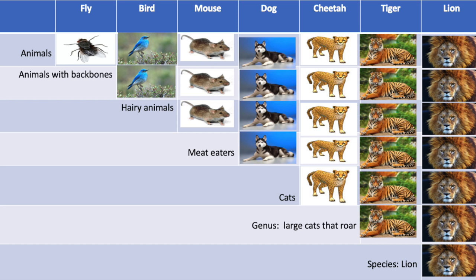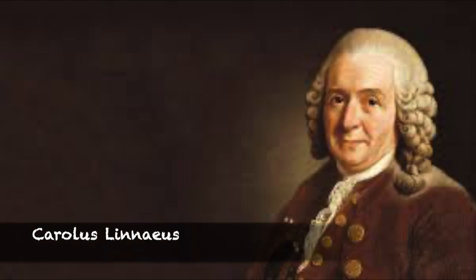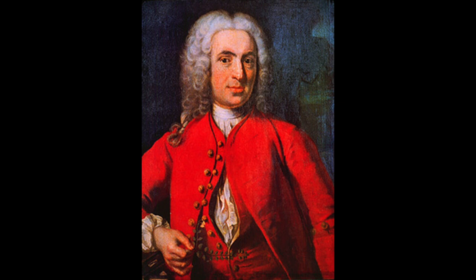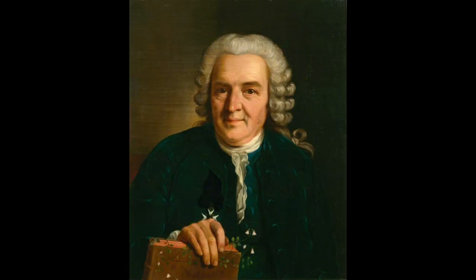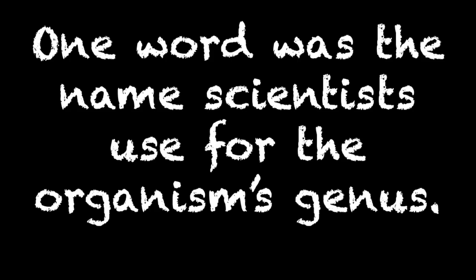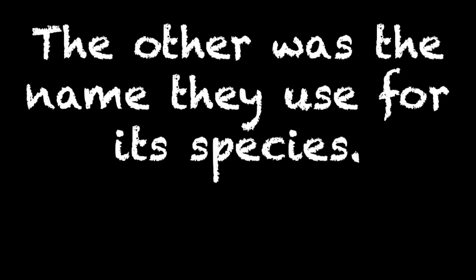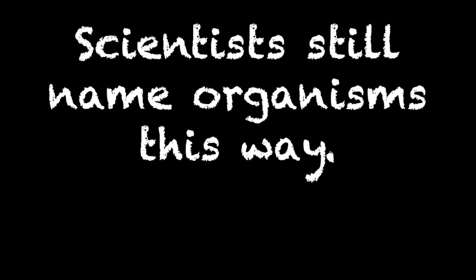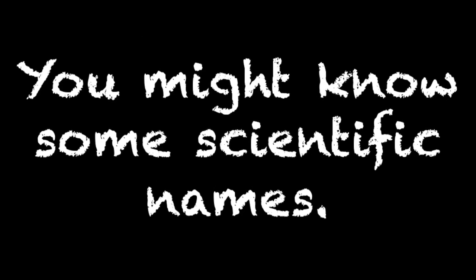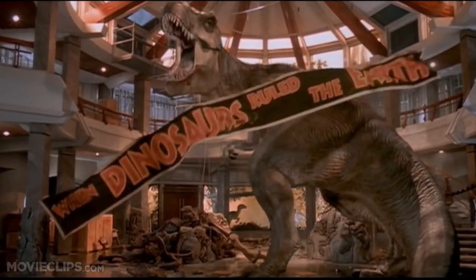Organisms in the same genus are closely related. About 250 years ago, Carolus Linnaeus, a Swedish biologist, developed a way to name organisms and show relationships. He gave each kind of organism a two-word name. One word was the name scientists use for the organism's genus, and the other was the name they use for its species. Scientists still name organisms this way. You might know some scientific names. For example, Tyrannosaurus rex, or T. rex for short, is a dinosaur that lived millions of years ago. It is in a genus scientists named Tyrannosaurus, and one kind of dinosaur in that genus makes up the species rex.